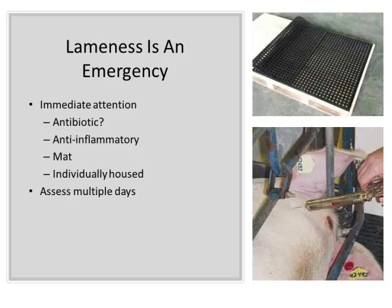Lameness is an emergency. Sows are quite good at guarding pain or inflammation, so by the time they become a noticeably lame animal, a lot of damage is already done. Antibiotic treatment may or may not have effect — it's hard to get antibiotic into the joint and the infectious part may be out of the joint already. Anti-inflammatory treatment is certainly important. Getting mats in place for lame sows we individually house, and then making a multi-day assessment and multi-day treatment are essential — the 'she should be fine' mentality doesn't work.